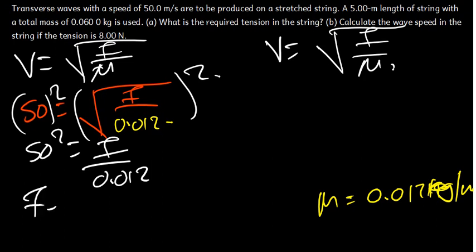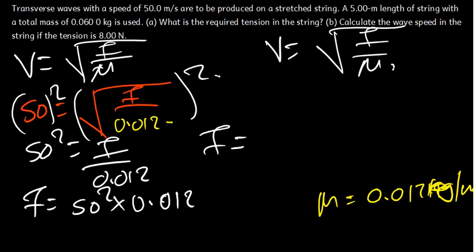The force equals 50 squared times 0.012. Our tension force is 0.012 times 50 squared, which gives us 30 newtons. So our tension force is 30 N. Part B asks us to calculate the wave speed if the tension force is 8 newtons.